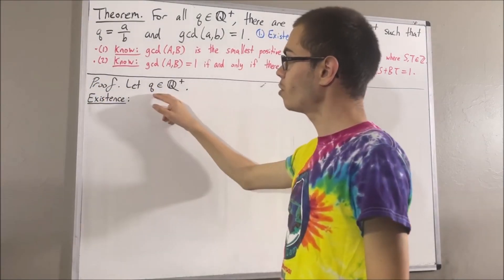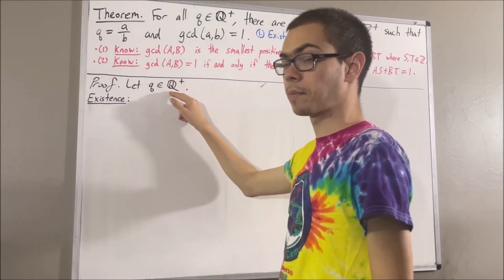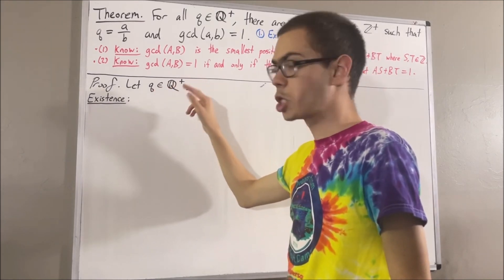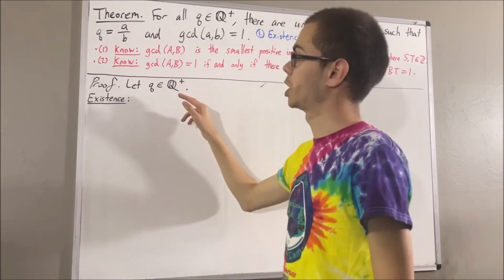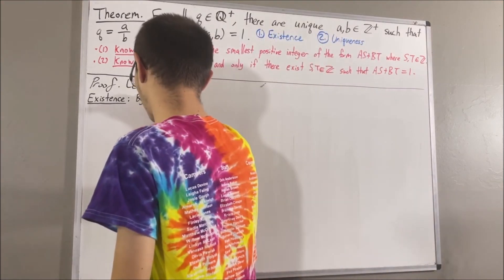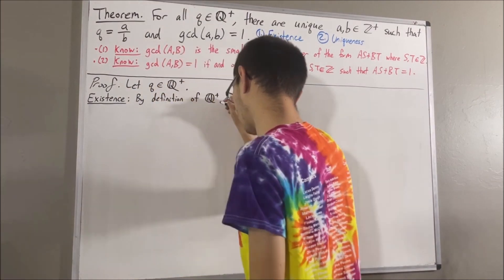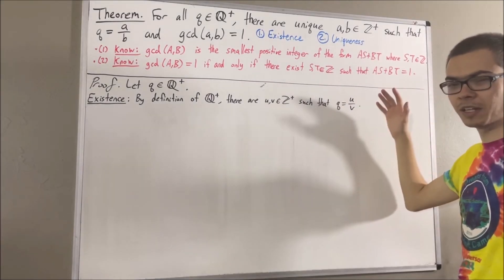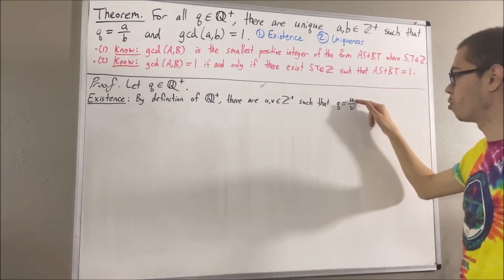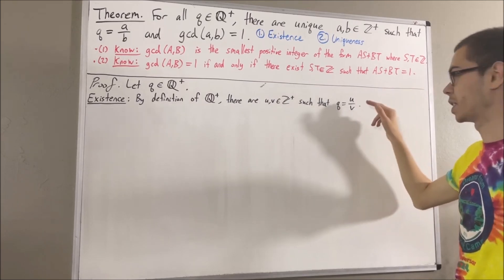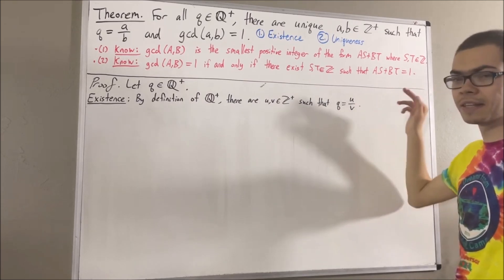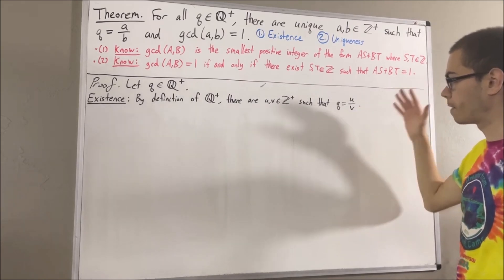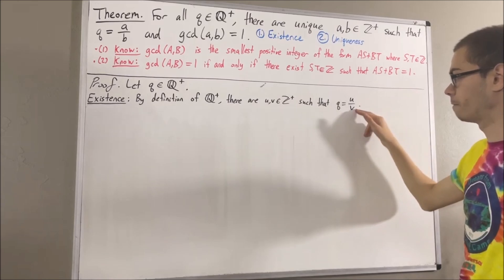Since Q is a positive rational number, by definition of the positive rational numbers, this means that there exist positive integers U and V such that Q is equal to U over V. Intuitively, we want to divide the numerator and denominator by the greatest common divisor of U and V, because that would put the fraction in simplest form. So let's define the greatest common divisor of U and V by the letter G.